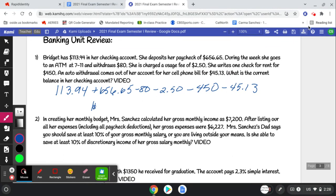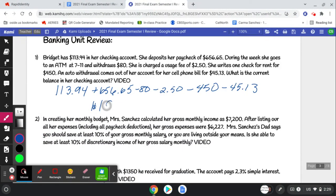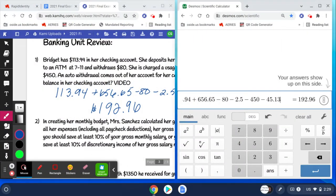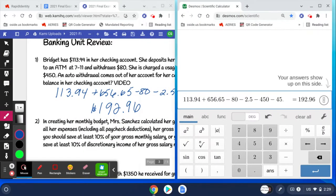Minus $450, minus $45.13. And so what she has left in her account is $192.96. And you're always going to want to do the additions and subtractions twice, unless you're doing it on a Desmos where you can see all of these transactions as they're happening. Always double check your math before you're done.